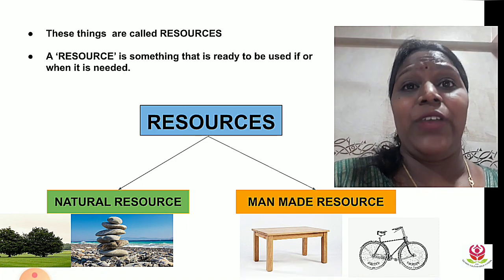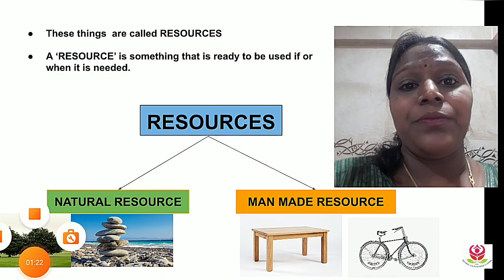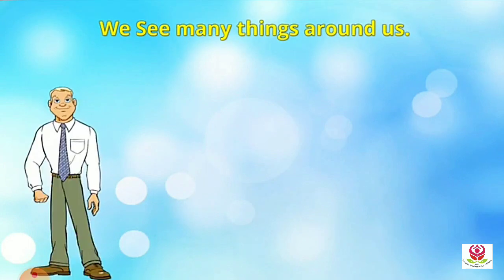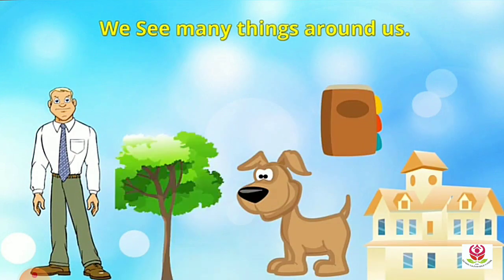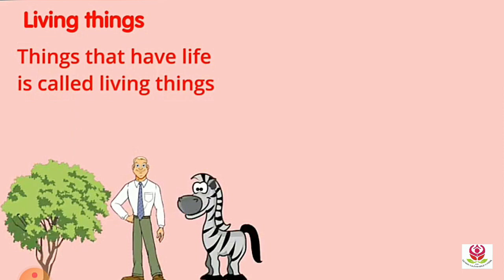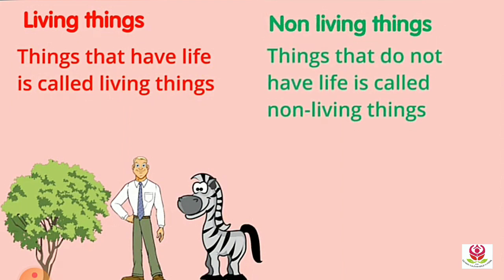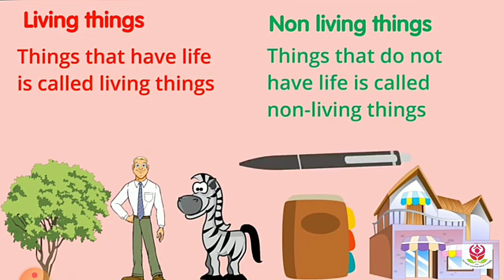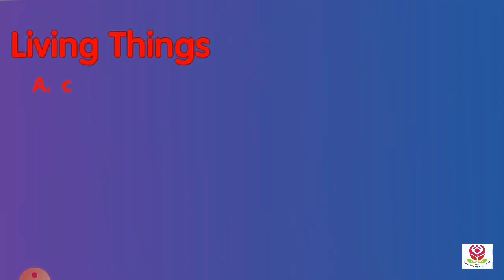Today in our class we are going to learn about living and non-living things. We can see many things around us like man, book, dog, house, and trees. Living things are the things that have life — for example, the tree, the man, and the animal. Non-living things are the things that do not have life, like a book, a house, and a pen.